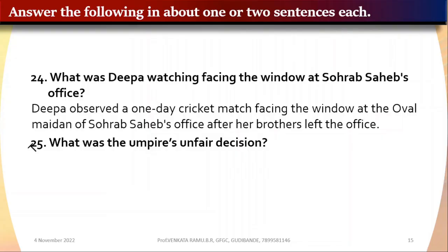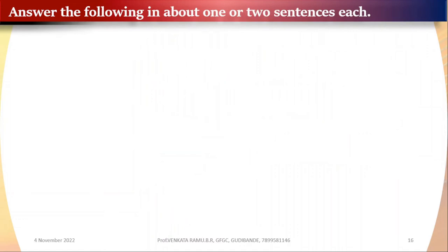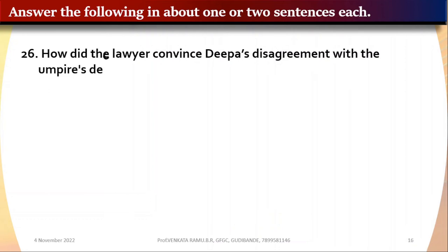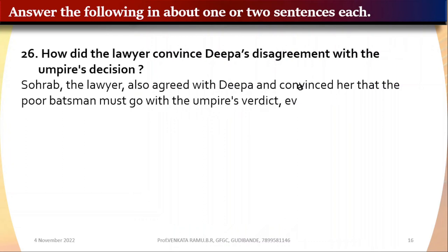Question 25: What was the umpire's unfair decision? The player had not been out of the crease — he was inside — but the umpire unfairly declared him out. Question 26: How did the lawyer convey his agreement with Deepa's disagreement with the umpire's decision? Saurabh the lawyer agreed with Deepa and convinced her that the poor batsman must go with the umpire's verdict even if it is unfair.